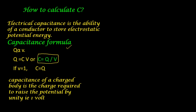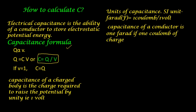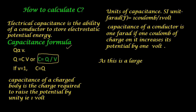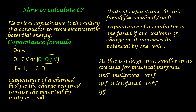We have the formula C equals Q upon V to calculate capacitance. The unit of capacitance is the farad, equal to 1 coulomb per volt. The capacitance of a conductor is 1 farad if 1 coulomb of charge increases its potential by 1 volt. Since this is a large unit, smaller units are used in practice: millifarad (10 raised to minus 3 farad), microfarad (10 raised to minus 6 farad), and picofarad (10 raised to minus 12 farad).